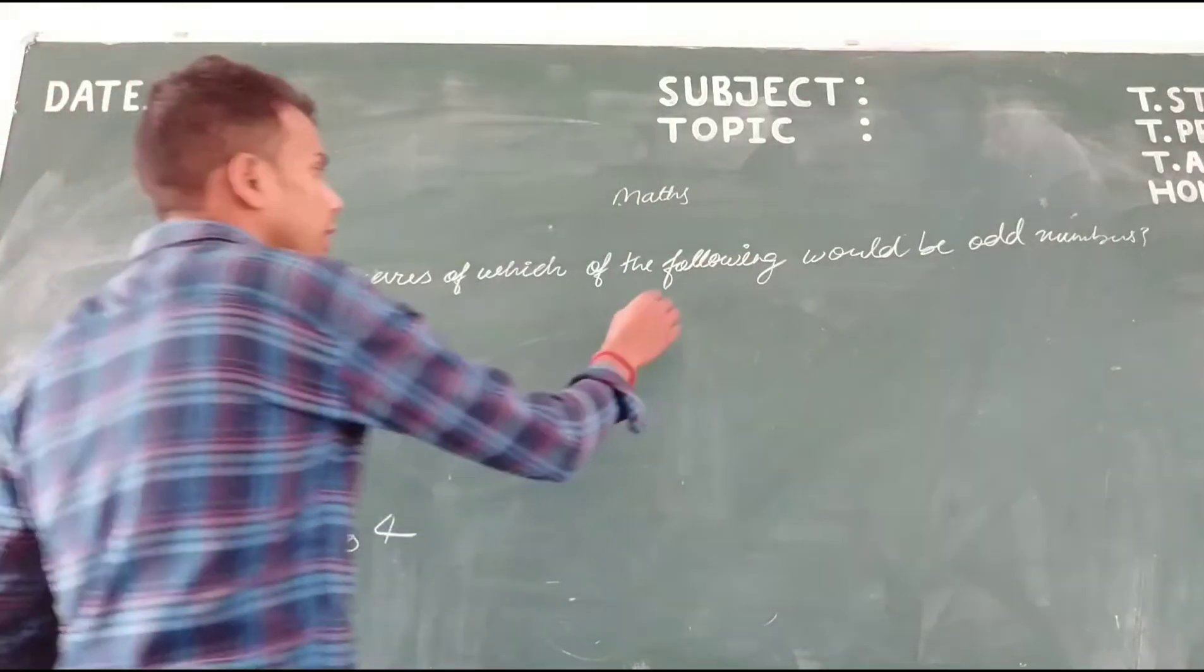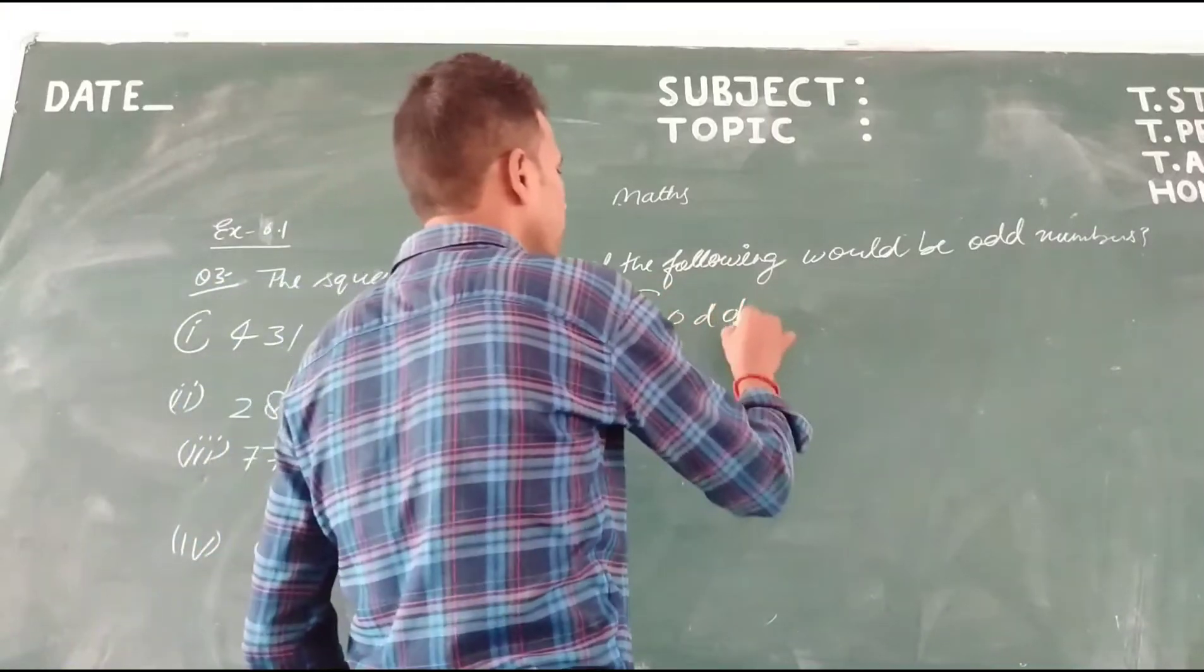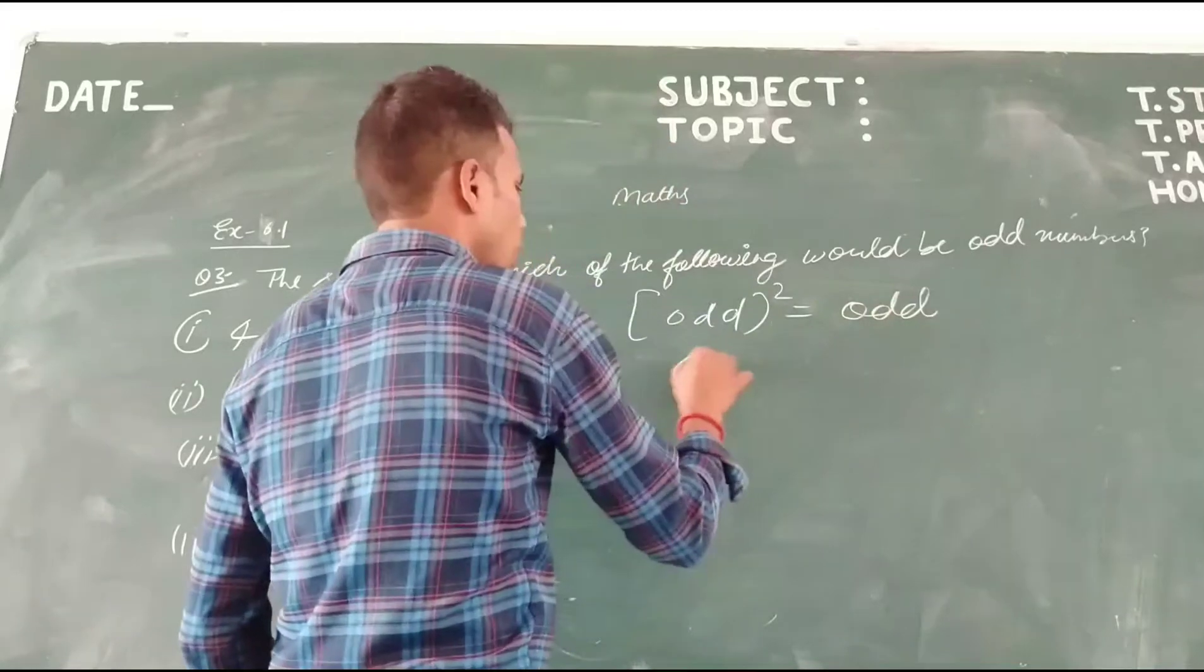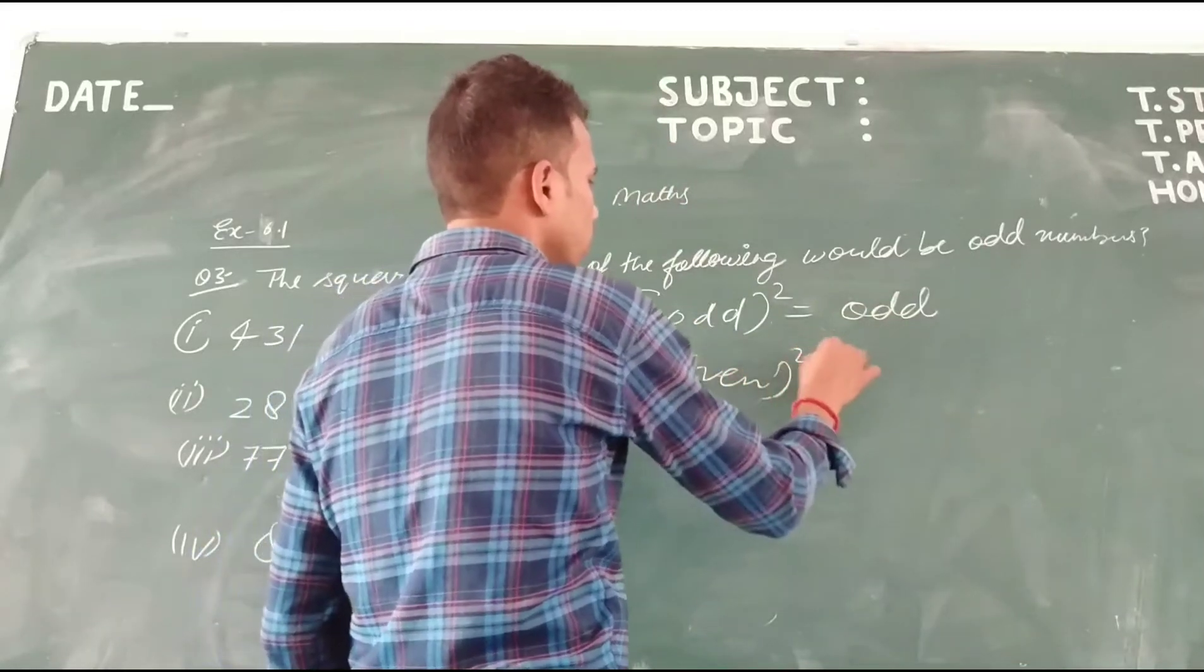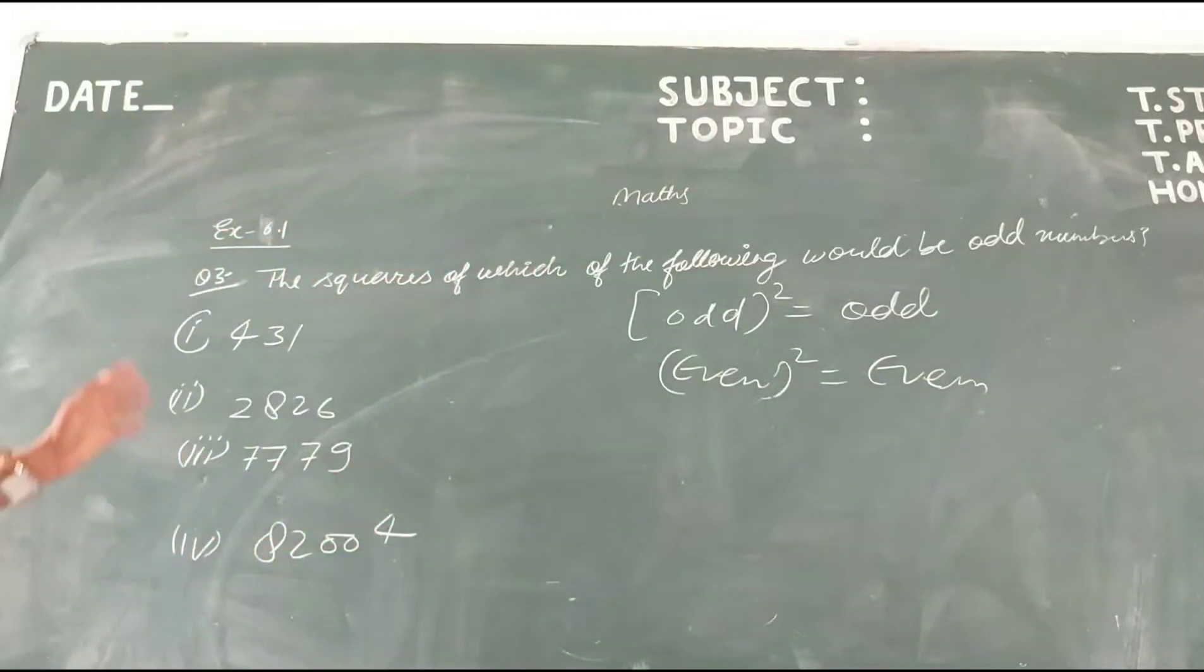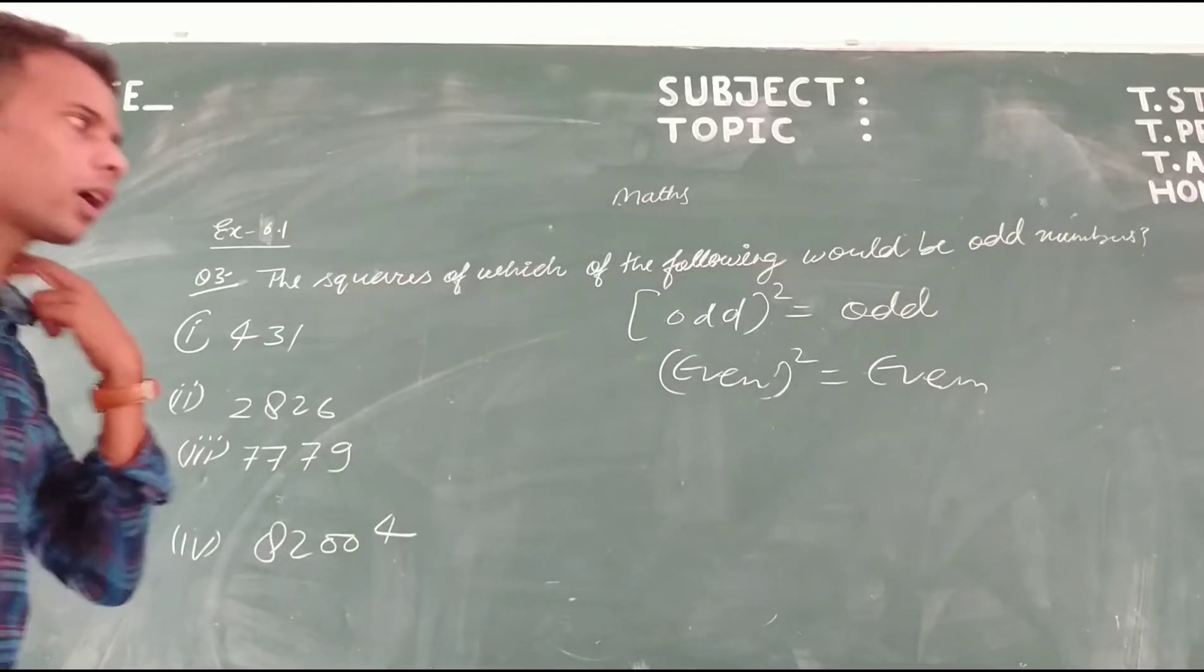We know that square of an odd number is always odd. Square of an even number is always even. Without squaring, we can find out which of the following would be odd numbers. Which number is odd? How do we check?